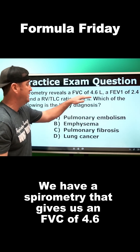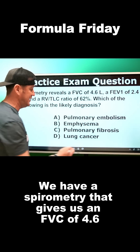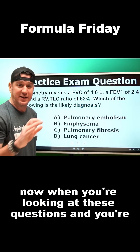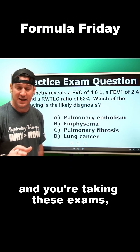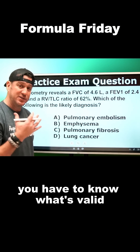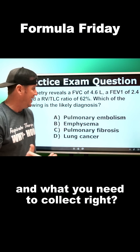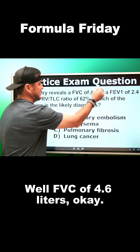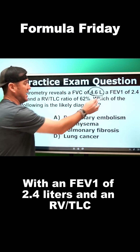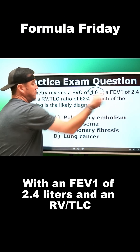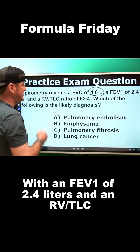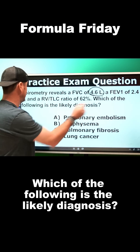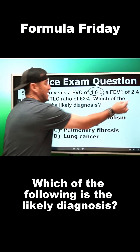We have a spirometry that gives us an FVC of 4.6. When you're looking at these questions and taking these exams, you have to know what's valid and what you need to collect. With an FVC of 4.6 liters, an FEV1 of 2.4 liters, and an RV to TLC ratio of 62%, which of the following is the likely diagnosis?